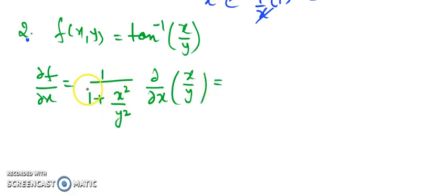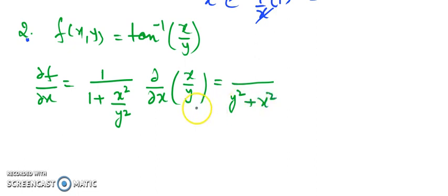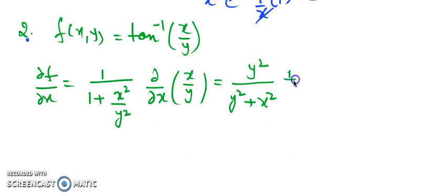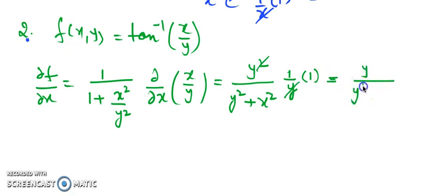In this expression, taking LCM we get y² + x². This y² will go to the numerator after simplification. Now when we perform the derivative with respect to x, x is in the numerator and by the power formula, 1/y is constant and derivative of x is 1. So y and y cancel, and we are left with y / (x² + y²).